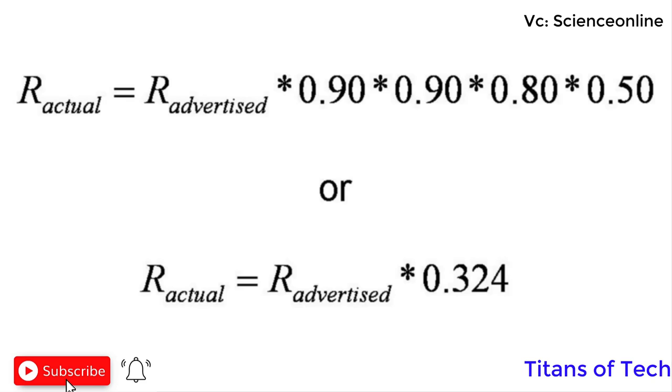Actual range equals advertised range times 0.9 times 0.9 times 0.8 times 0.5, or actual range equals advertised range times 0.324. The Nissan Leaf advertises that you can go 73 miles on a charge. 73 times 0.324 is 24 miles.